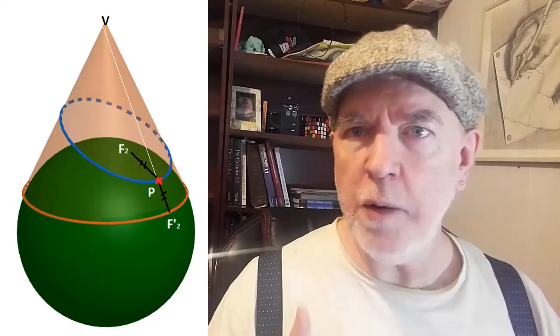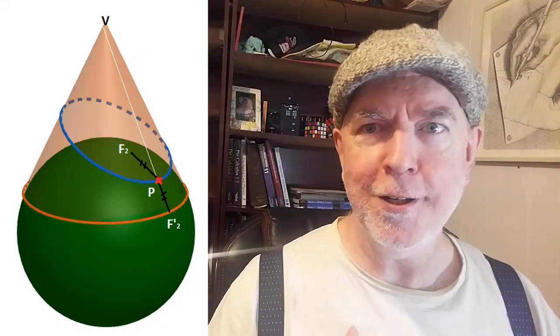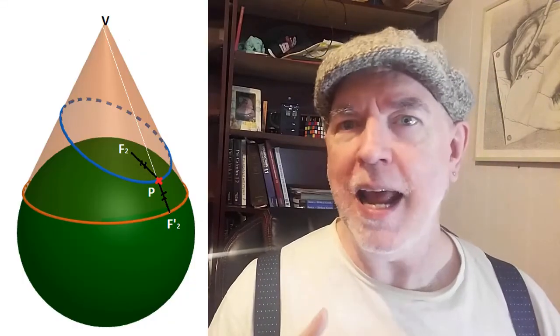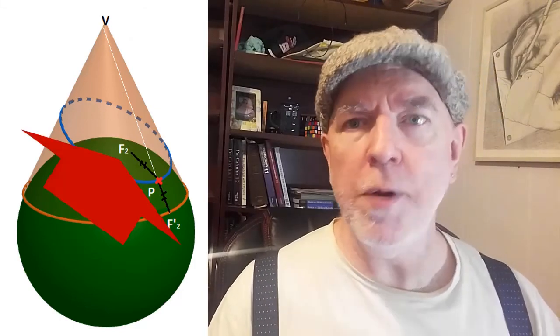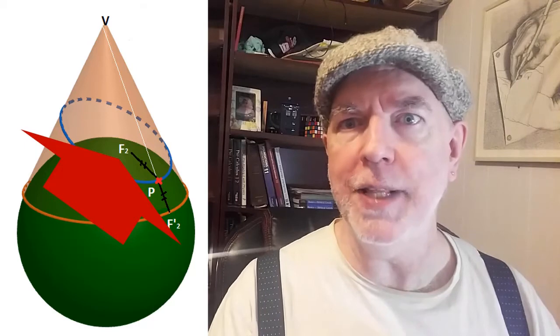Now let's remove the plane for clarity and the sphere and put a new sphere underneath the ellipse. It will also touch where the plane was at some unique point F2 which is within the boundary of the ellipse.